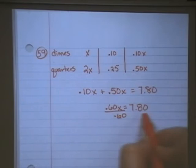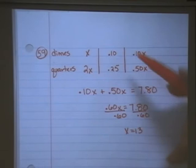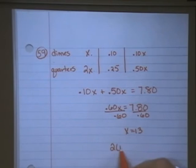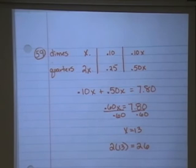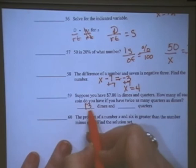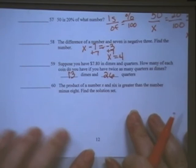And then all I have to do is divide by .60 and x would equal 13. That gives me 13 dimes and 2 times 13 gives me 26 quarters. So again, that is 13 dimes and 26 quarters.